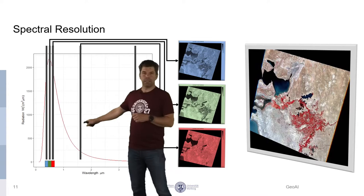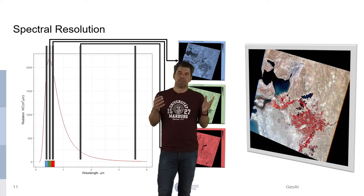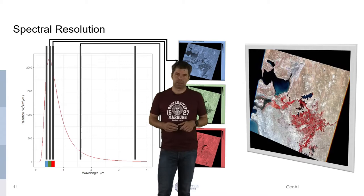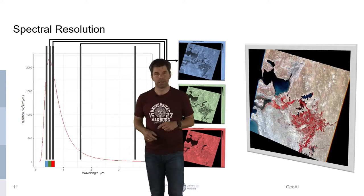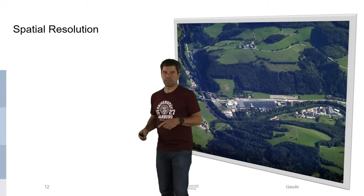And since this band here in the near-infrared, where we have this high reflection, is colored in red, the vegetation appears red in our so-called false composite. These false color composites or true color composites are one way to visualize remote sensing observations, and we will see other ways in dealing with remote sensing data later in this course. Spectral resolution was the first characteristic of our remote sensing systems.